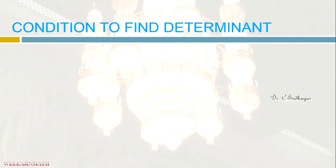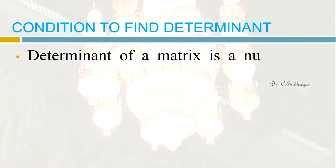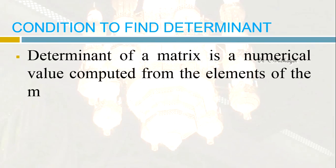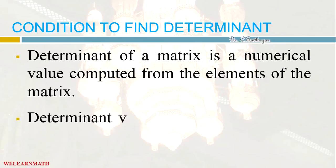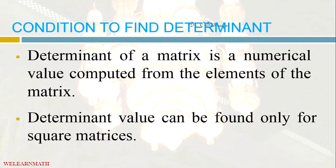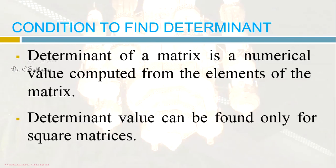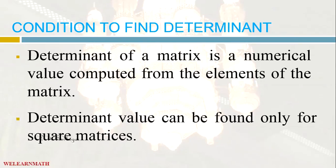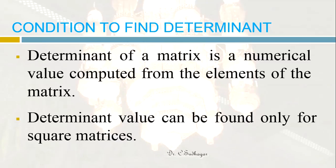First let us see what is the condition to find the determinant of a matrix. The determinant is a numerical value computed from the elements of the matrix. It can be found for any square matrix. If it is not a square matrix — that is, if the number of rows is not equal to the number of columns — then the determinant is not defined.